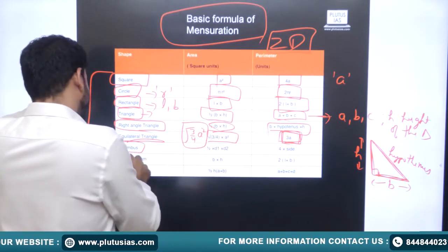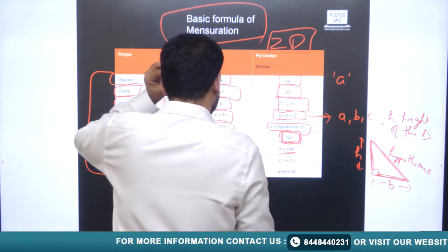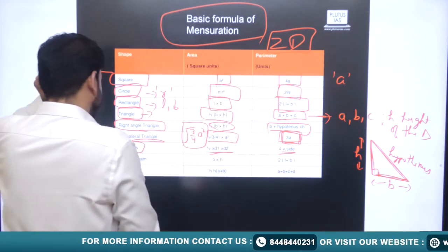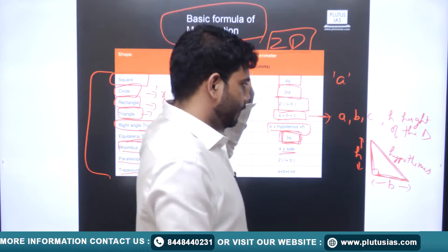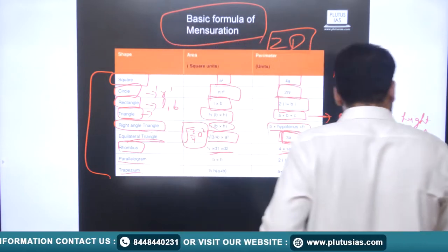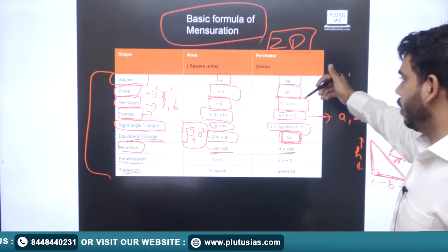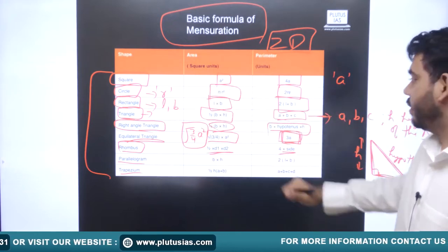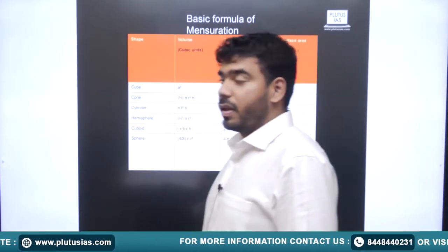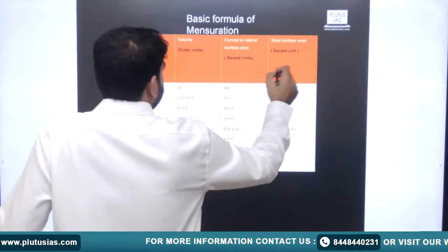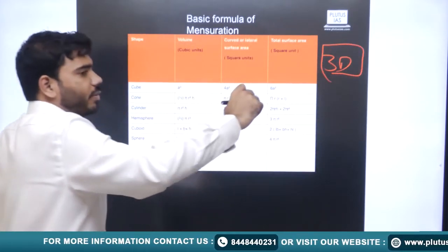For a rhombus, parallelogram, and trapezoid, we similarly have formulas for perimeter and area. These cover all the figures in the domain of two-dimensional shapes.